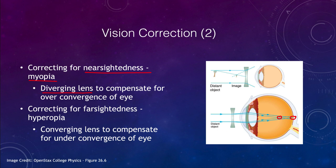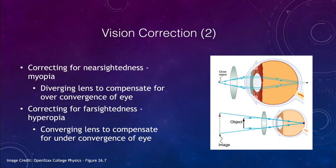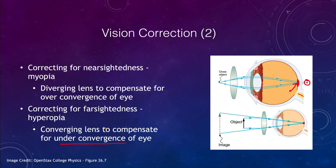We can also correct for hyperopia, and we do that similarly. In this case, we are going to use a converging lens, because the eye is under-converging. The eye is trying to bend things to a focus way beyond the retina, so when light rays reach the retina, they are out of focus. We use a converging lens to bring them to focus on the retina so that the person can see clearly.